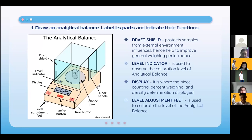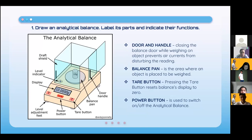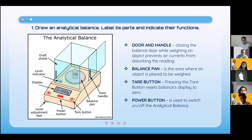In our analytical balance, we have eight parts: the draft shield, level indicator, display, level adjustment feet, door handle, balance pan, tare button, and power button. The draft shield protects samples from external environmental influences such as air or dust, improving weighing performance. The level indicator is used to observe the calibration level of the analytical balance.